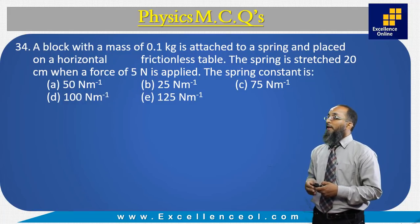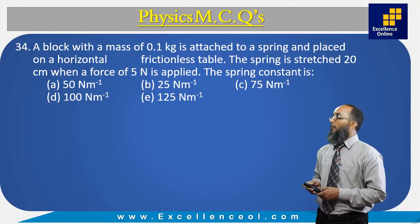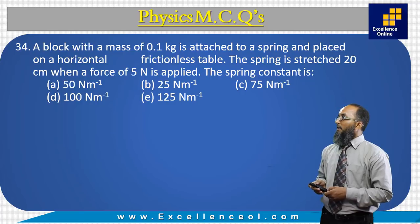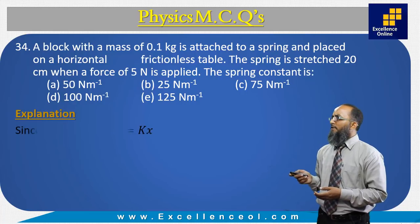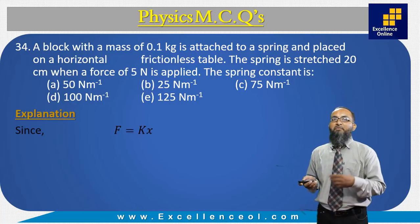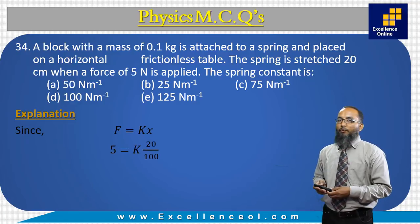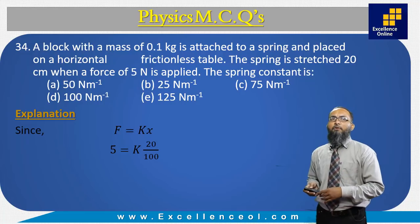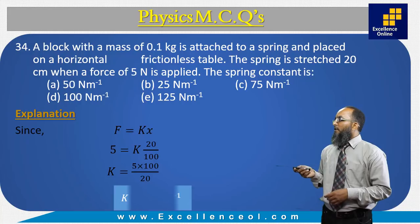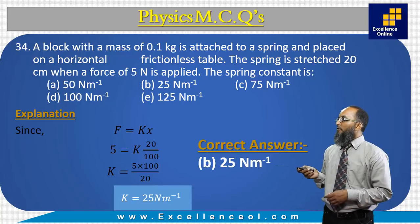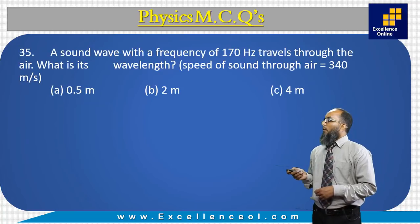A block of mass 0.1 kg is attached to a spring on a frictionless surface. The spring is stretched 20 cm when a force of 5 N is applied. Using Hooke's Law F = kx, substituting F = 5 N and x = 20 cm = 0.20 m, solving for k gives k = 5/0.20 = 25 N/m. The correct answer is B: 25 N/m.